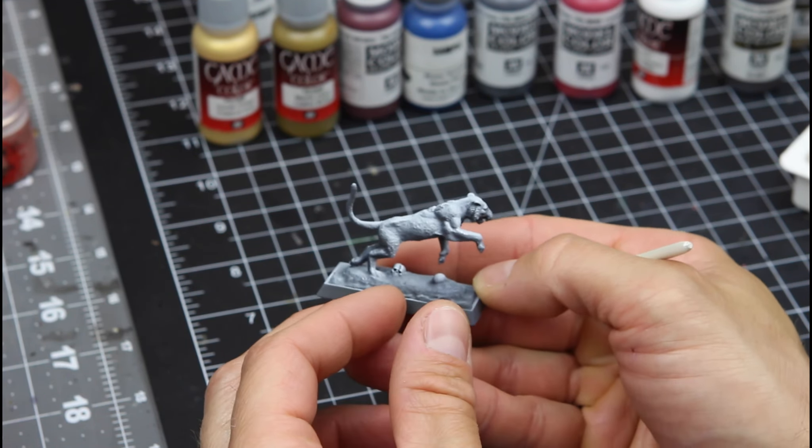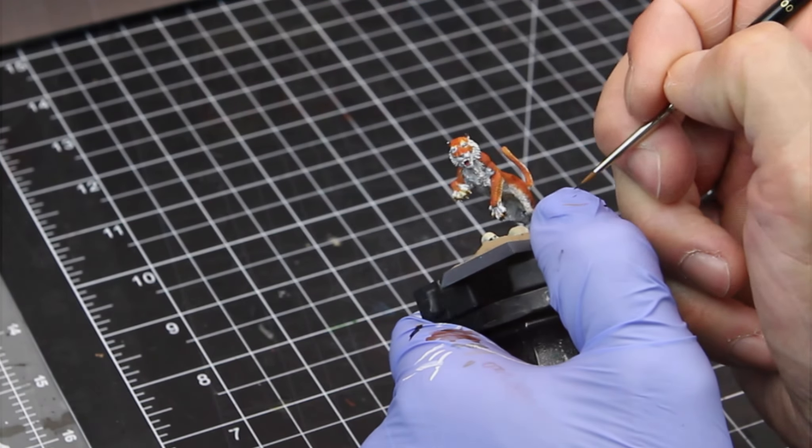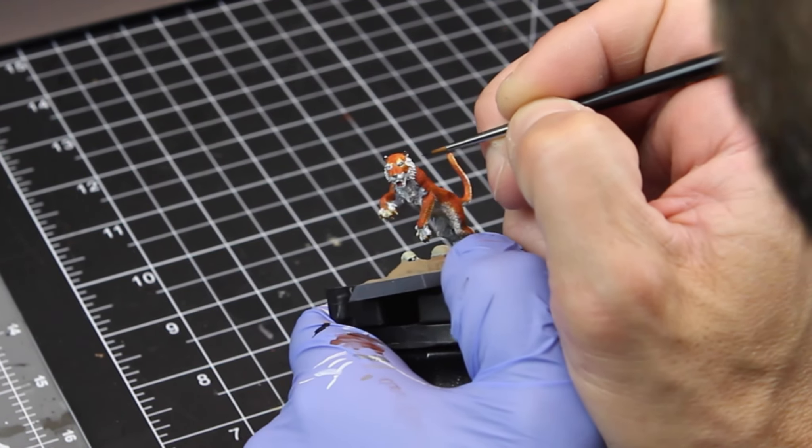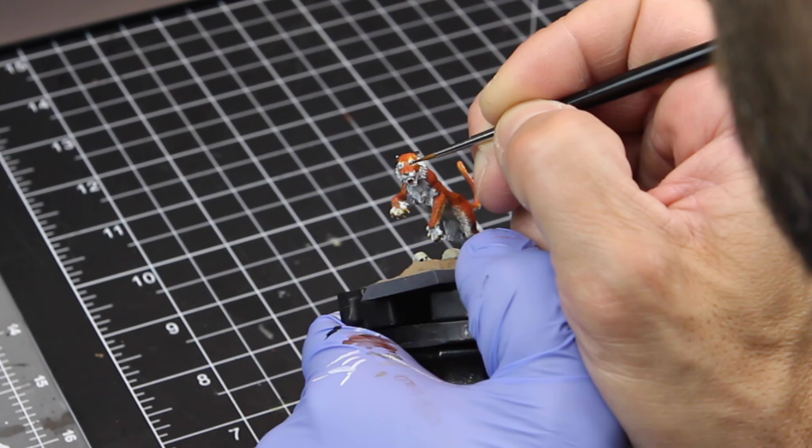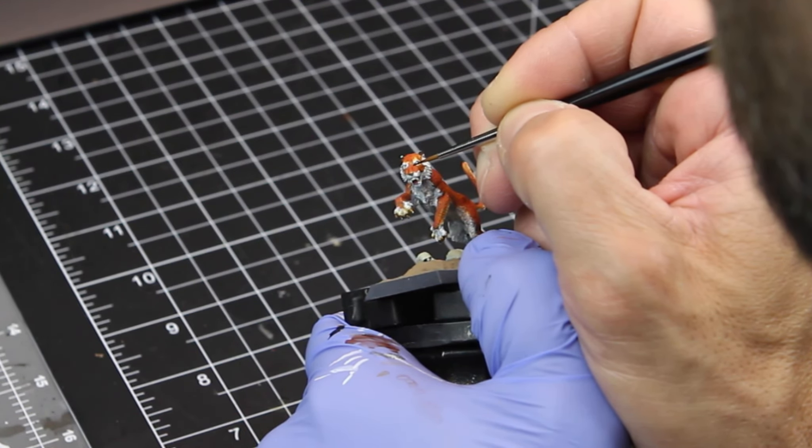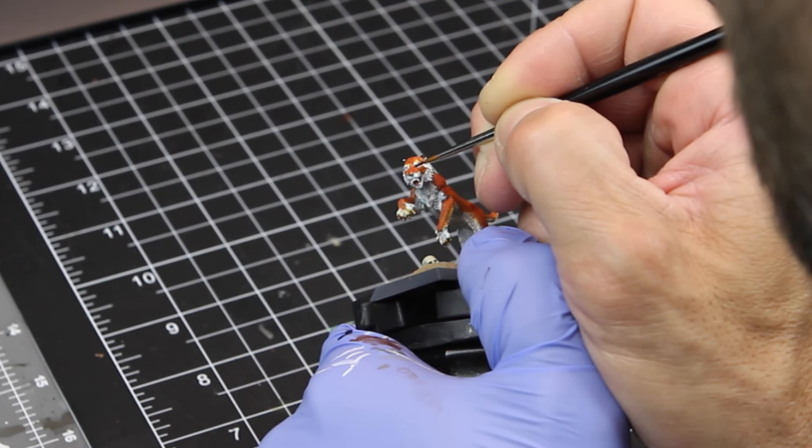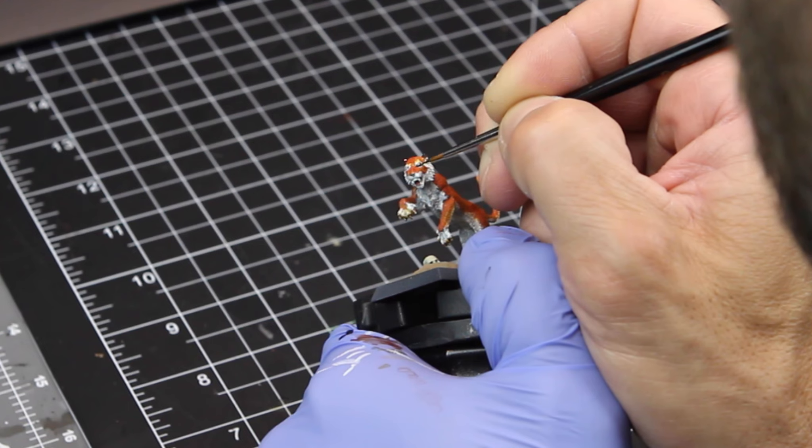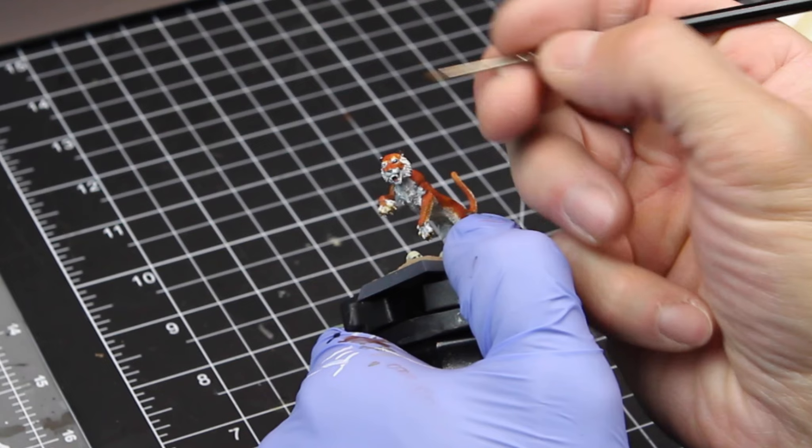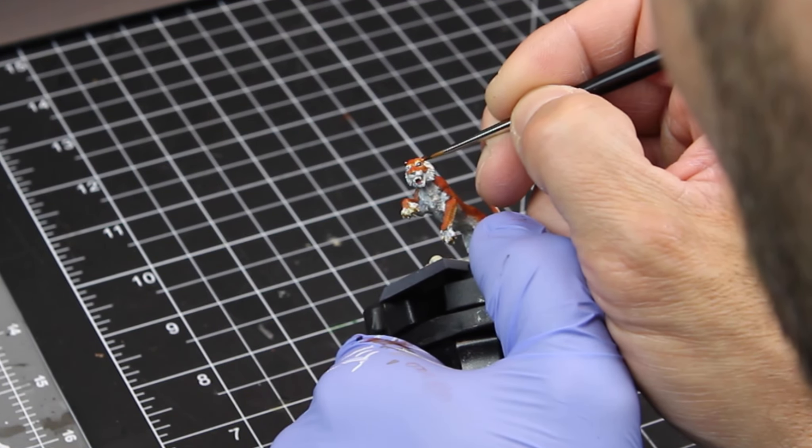All right, now we're going to use the tiger to do some eyes, work on our eyes here, as well as learning how to thin the paint down properly for fine detail. So I like to use a flow aid and mix that with the paint and a very small brush with a very fine point to do the eyes. And the same goes for all the fine line work when we work on his stripes on his back. The same can be said for, you know, doing details like tattoos or scars on miniatures as well.